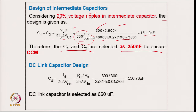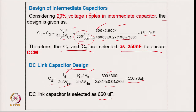For the DC link capacitor, C_d = I_d / (2 × ω × ΔV_dc). Calculating the output current and putting in all values gives 530.78 μF. The DC link capacitor is selected at a standard value of 660 μF.